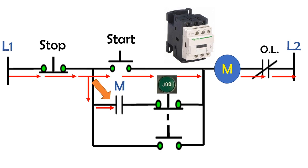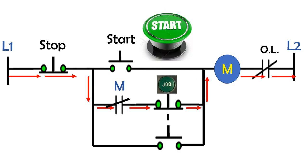When you release the start button, the current flow will divert from line one through the stop pushbutton, through the normally closed auxiliary contact, through the normally closed jog contact, through the magnetic coil and overload relay, then back to line two.